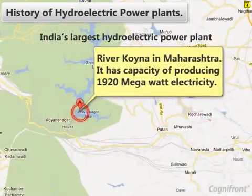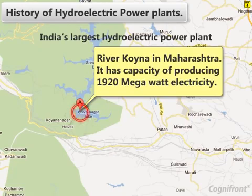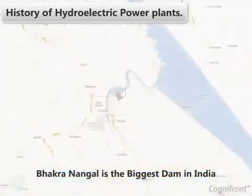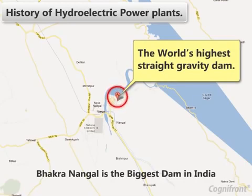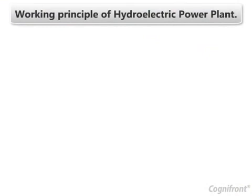India's largest hydroelectric power plant is located across the river Koina in Maharashtra. It has a capacity of producing 1920 megawatts of electricity. Bhakra Nangal is the biggest dam in India as well as the world's highest straight gravity dam.